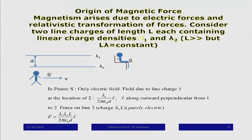Where did this magnetic field come from? There are no magnetic monopoles — at least with electric charges we said they give rise to a field. The magnetism phenomenon arises essentially due to electric forces. As I told you, there are only four types of forces in nature, and the only force we know here is the Coulomb force. Magnetism also comes from it — I will show by a simple example that magnetism arises because of relativistic effects.